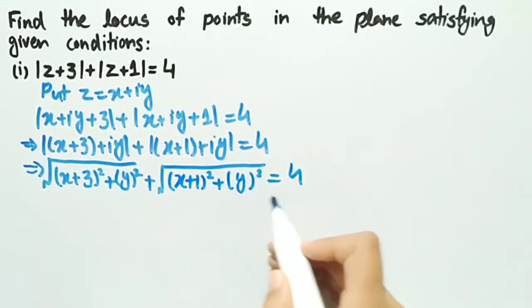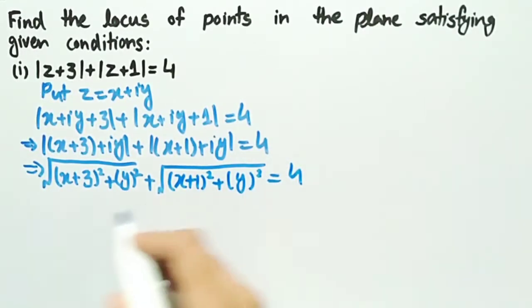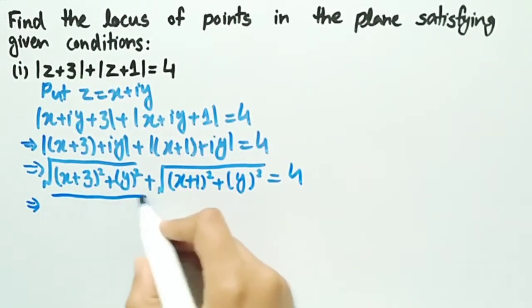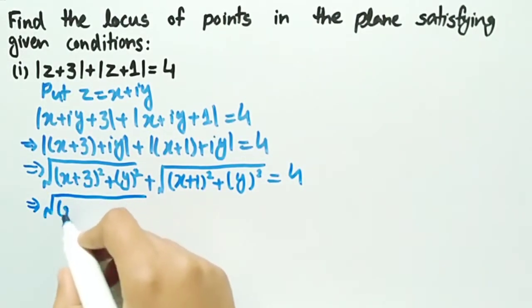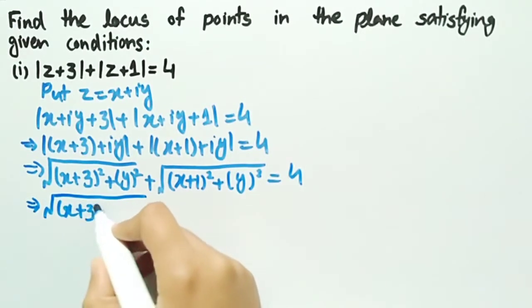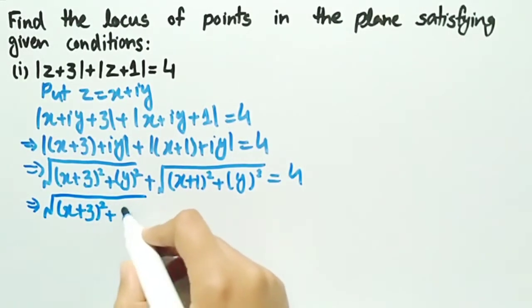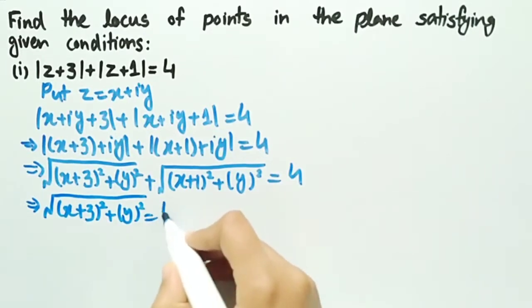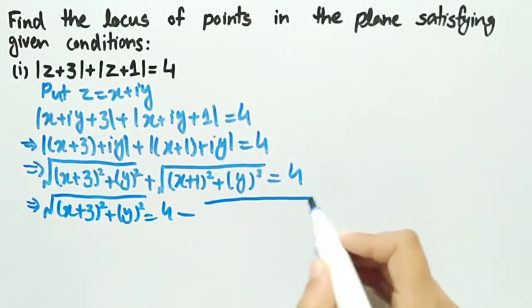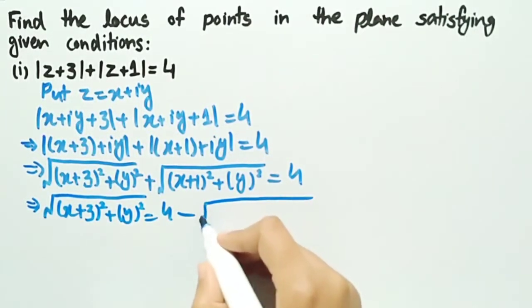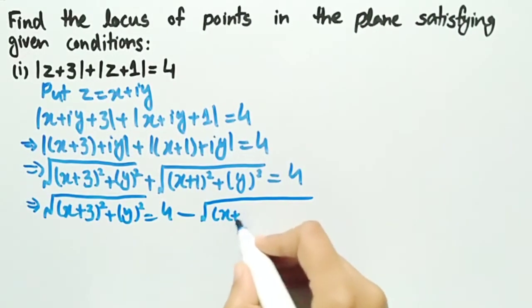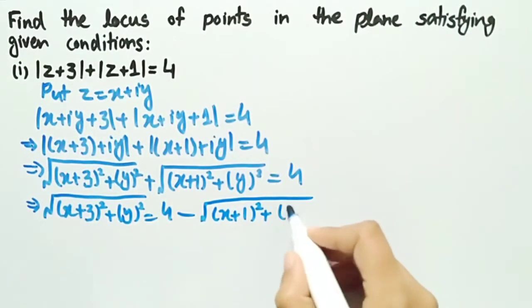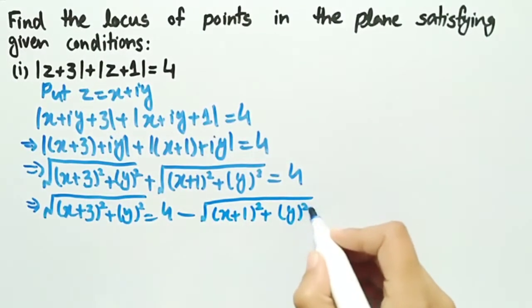Transferring one term to the other side of the equality, we get: square root of (x plus 3) whole square plus y square, equal to 4 minus square root of (x plus 1) whole square plus y square.